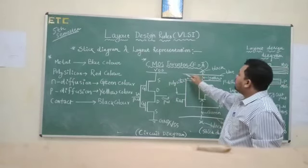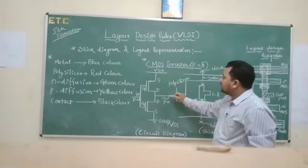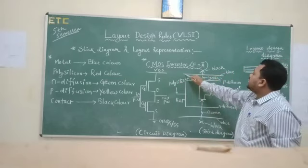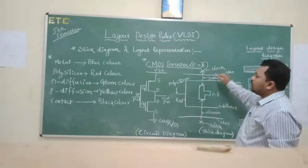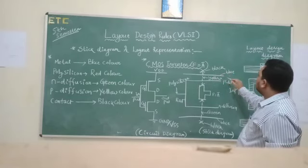First of all, the metal contacts—the VDD, the ground, and the outputs. These are the metal contacts. This is VDD, this is the metal contact for blue color.